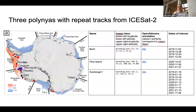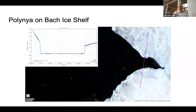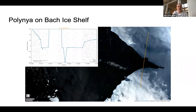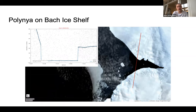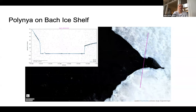Here we see the polinia on the Bach ice shelf. In the background we have a Sentinel-2 image from approximately the same time as a given ICESat-2 track. This figure was made using Google Earth Engine. We can see the cross-section of the ATL-03 and ATL-06 products. We can clearly see the polinia here, and in one of the cases we can also see some clouds — or at least something else being tracked.